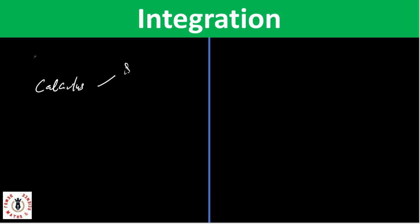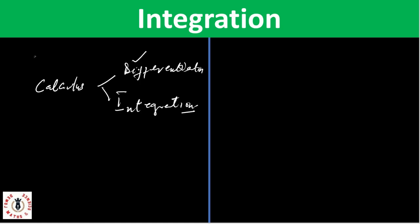From basic calculus, we know that calculus is divided into two branches: differentiation and integration. We have dealt with differentiation and have some lessons on it. If you missed our lessons on differentiation, please check the description below — I'll place links there. Today we'll be concentrating on integration, which is actually the opposite of differentiation.